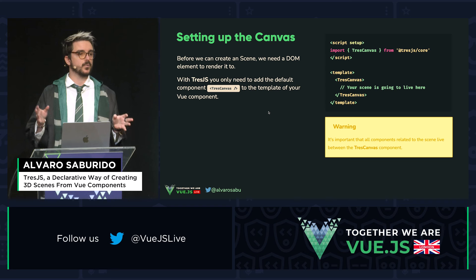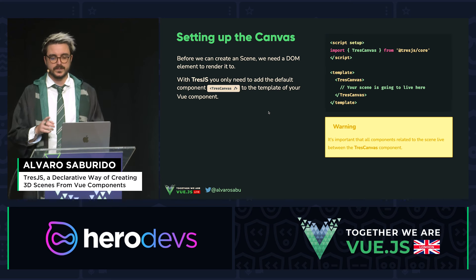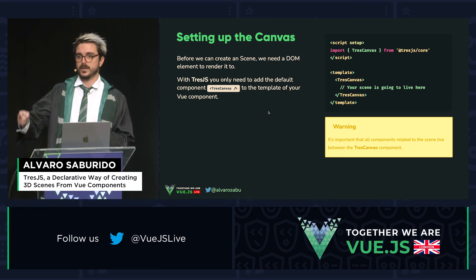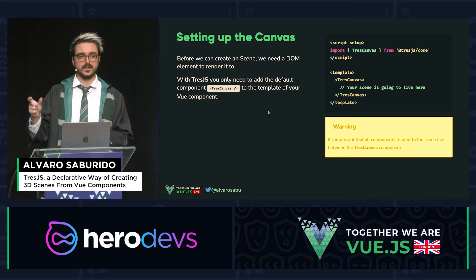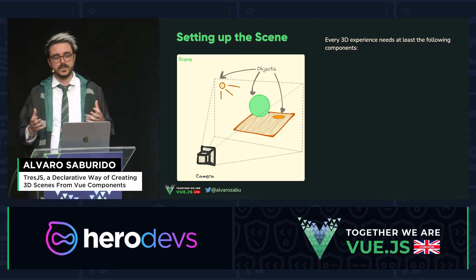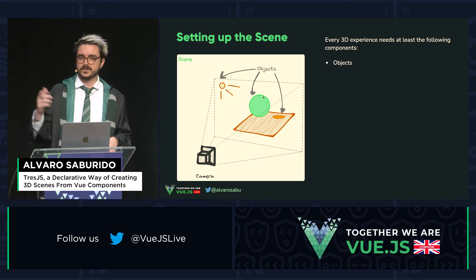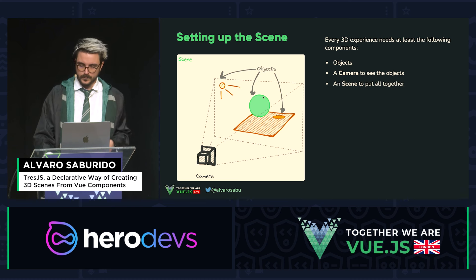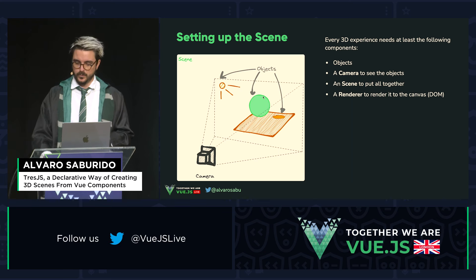First thing — how to use it. We need to set up a canvas. Three.js works with a DOM canvas element to draw everything. So before we can create a scene, we need to import the TresCanvas component from the core and add it to the template. Everything we want to render needs to be inside TresCanvas because it creates a custom renderer that works for 3D scenes. For setting up a scene, we need four things: objects like geometry and lights, a camera to be able to see it, a scene to put everything together, and a renderer to render to the HTML canvas element.